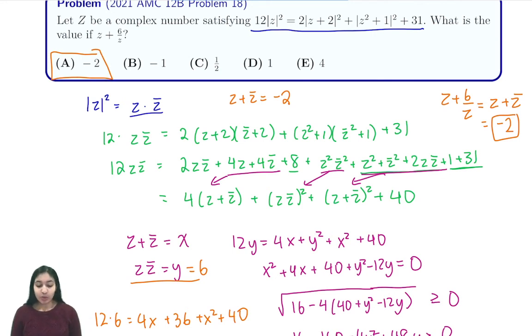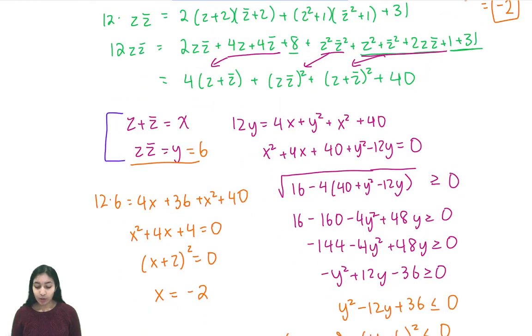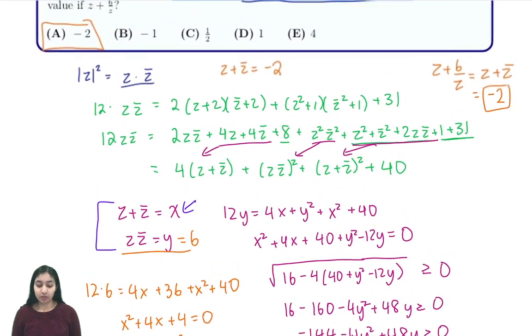So in this problem we use the key fact that the magnitude of z squared is z times z bar. We made this substitution everywhere and then we expanded. And then we plugged in our substitutions with z plus z bar and z z bar to see that our only possible solution for z times z bar was 6. And then we used that to solve for our variable x and then found z plus 6 over z through that and got that our answer was negative 2.